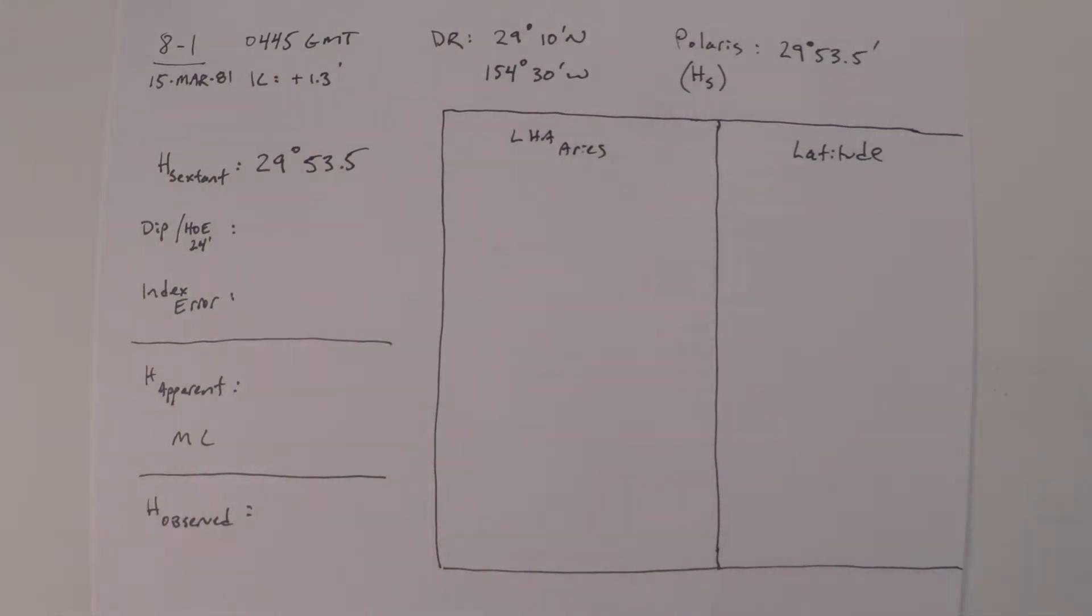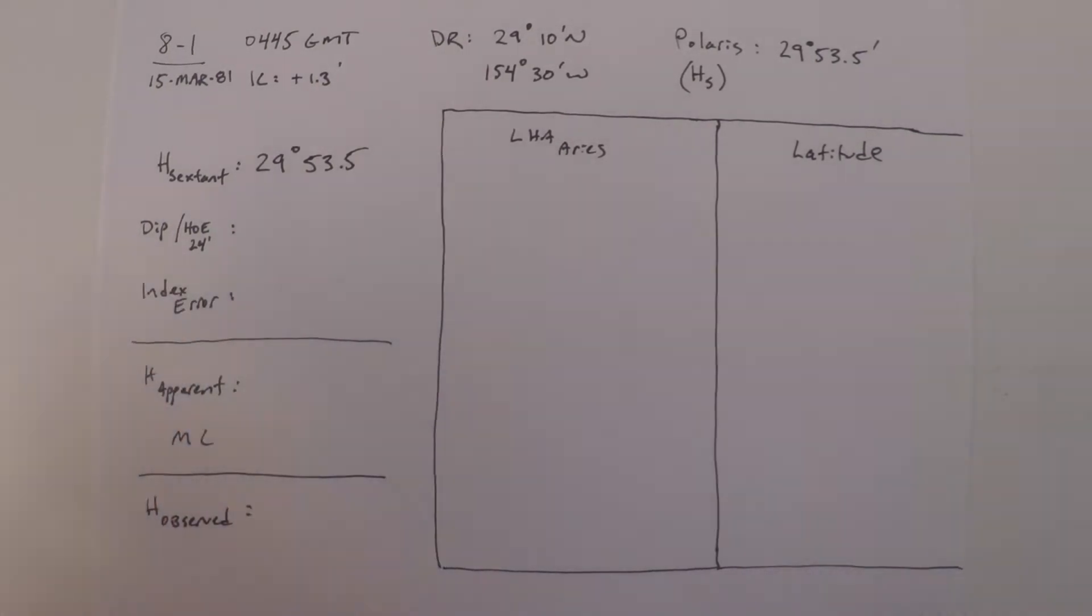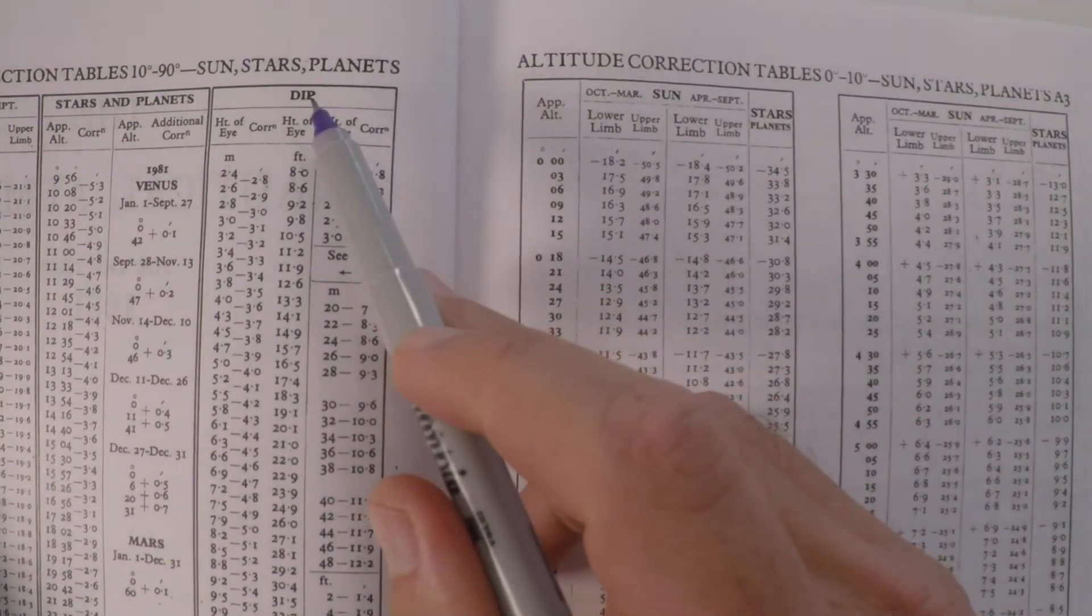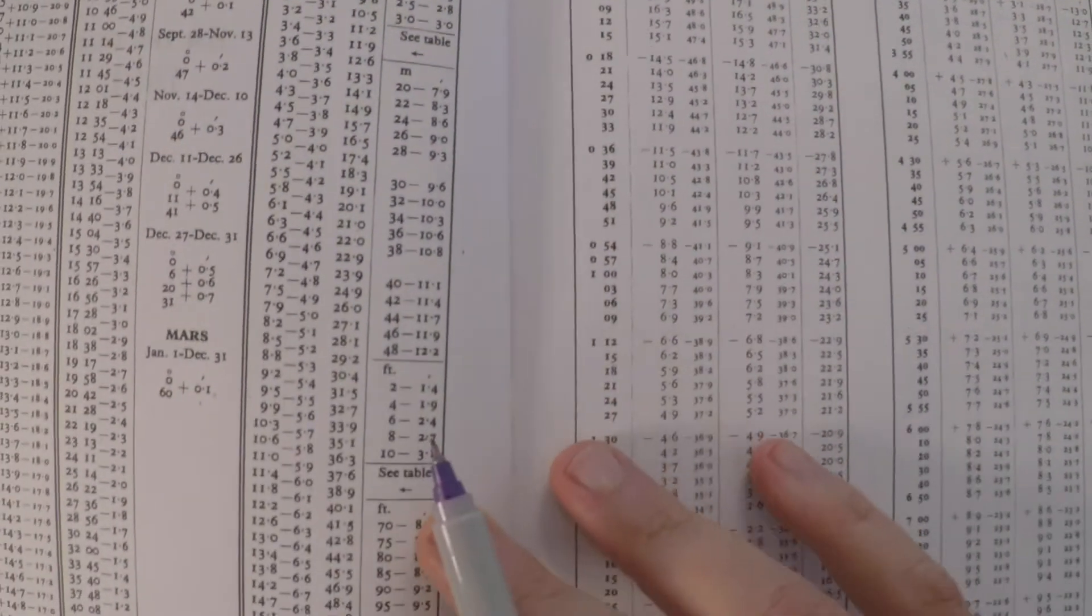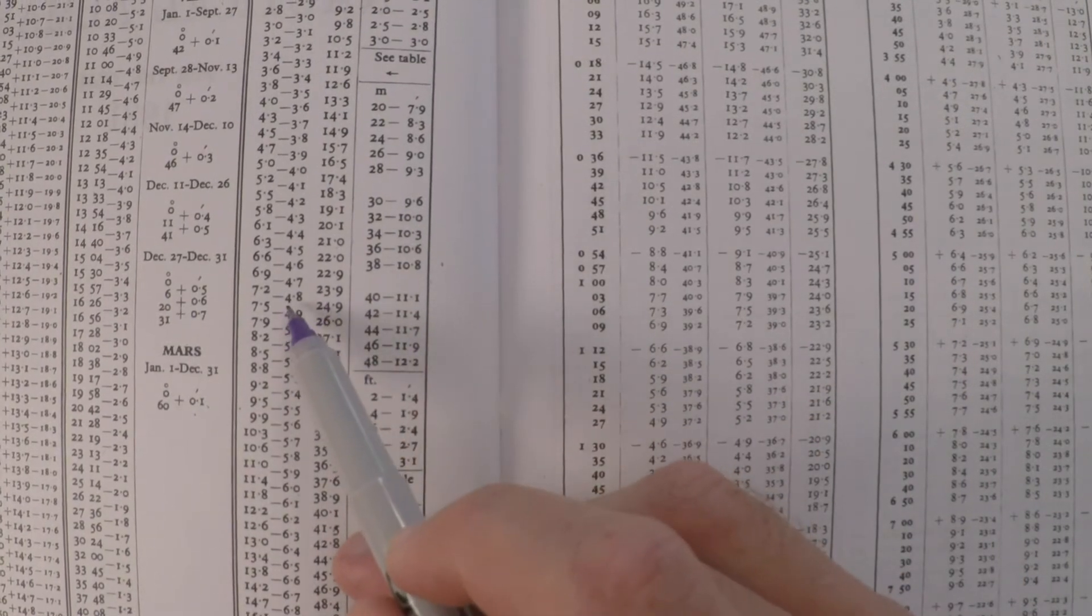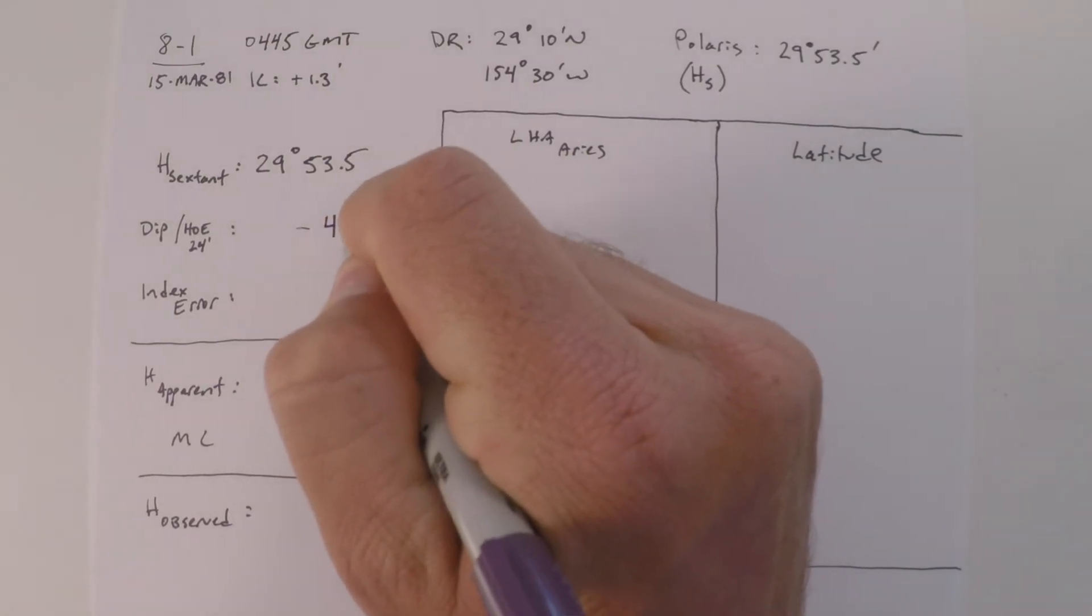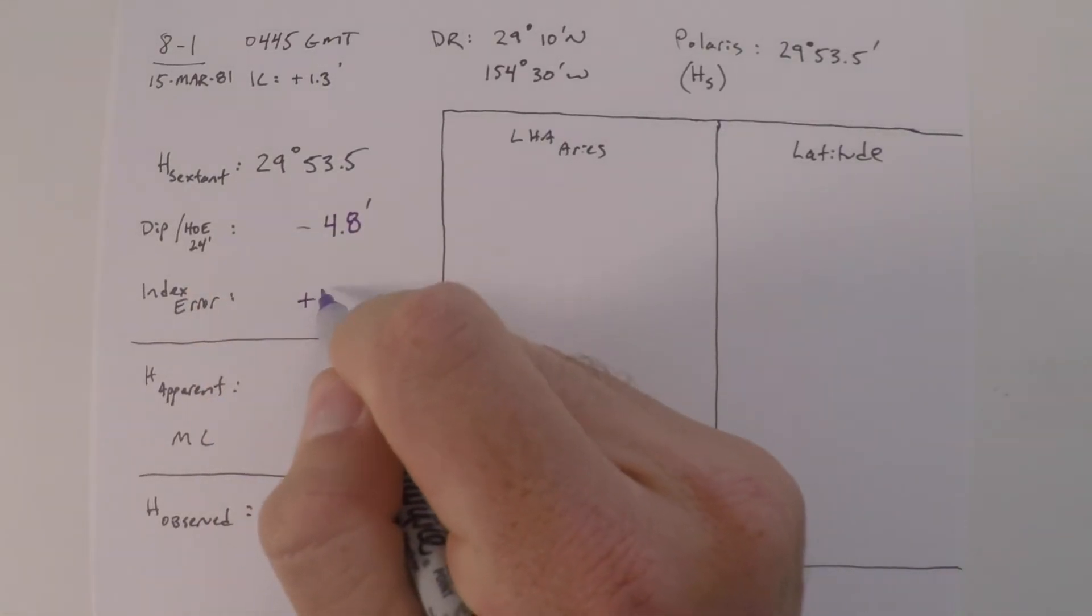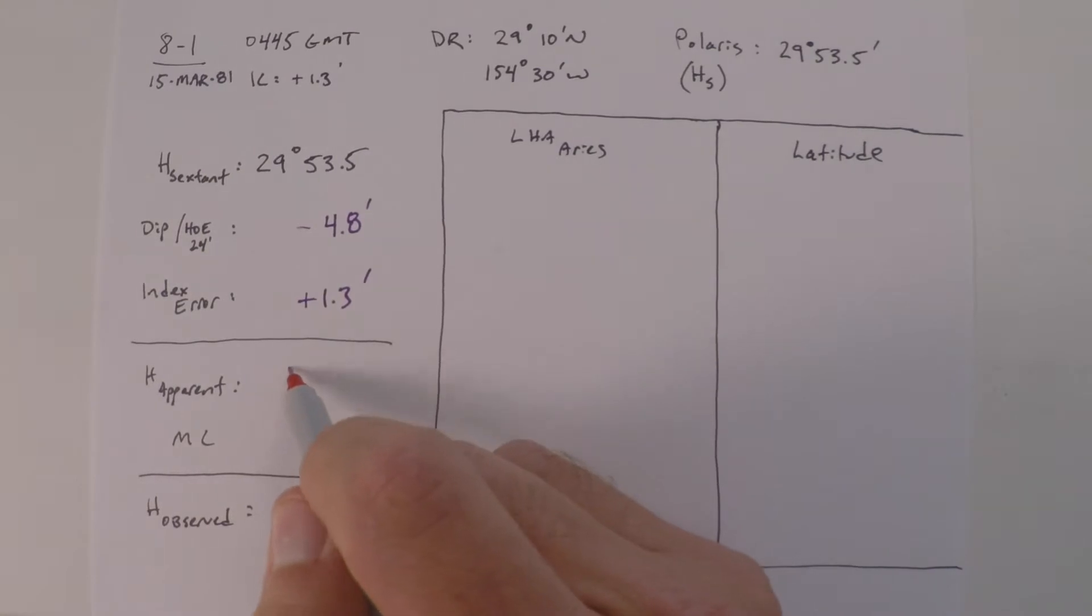The first thing we'll need to take a look at is the height of eye correction. In this case, our height of eye is 24 feet above the surface of the sea. So we look under the dip tables in the front of the nautical almanac until we come to a value that's close to 24 feet. It looks here like our correction is negative 4.8 minutes of arc. Next is our index error. It's given to us as a plus 1.3 correction. So we'll add those two together. That gives us our apparent altitude, our height apparent, of 29 degrees and 50 minutes.